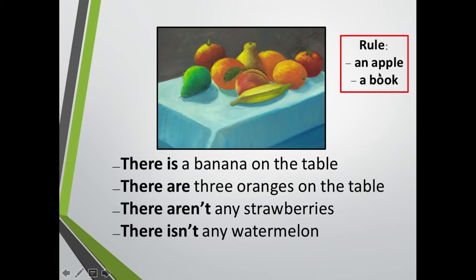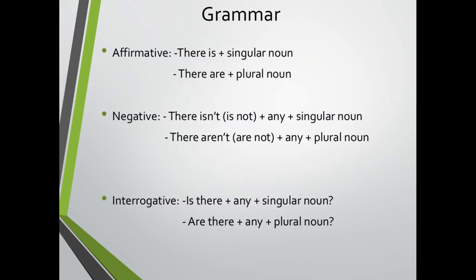En cambio, si la palabra comienza con consonante, la A queda tal cual. No le agregamos la N. Y A y AN tienen el mismo significado, un o una. ¿Ok? Vamos a ver más ejemplos.